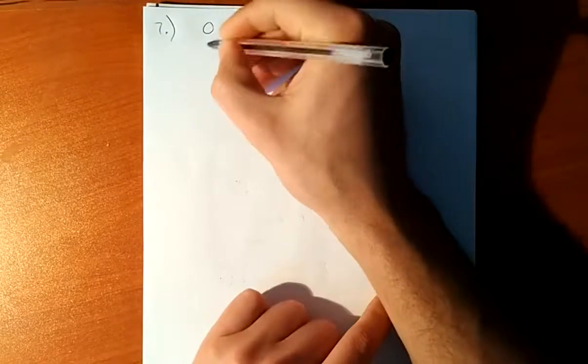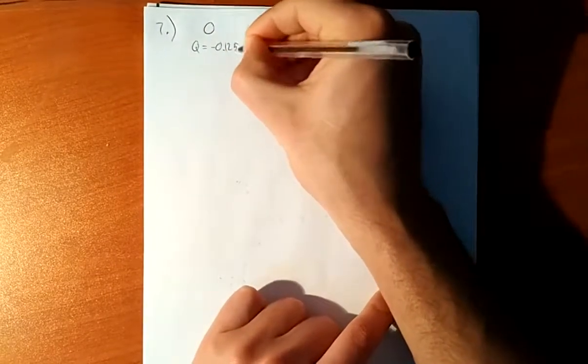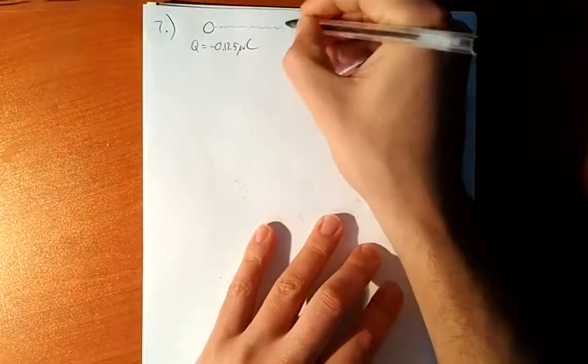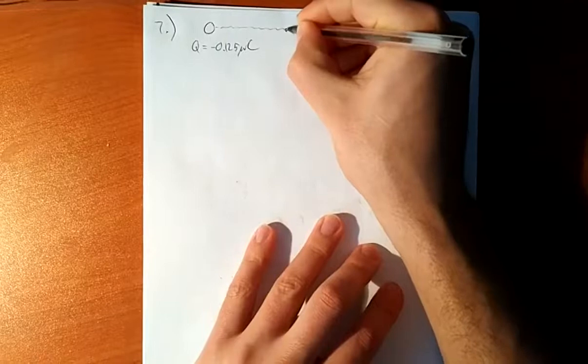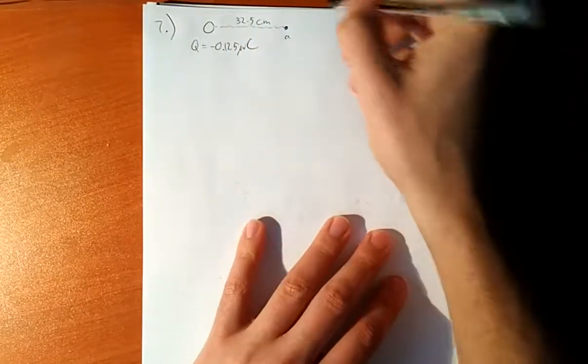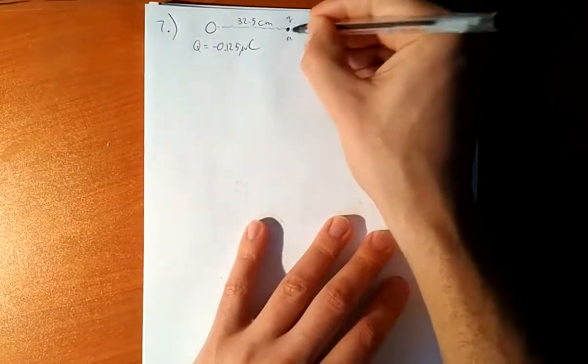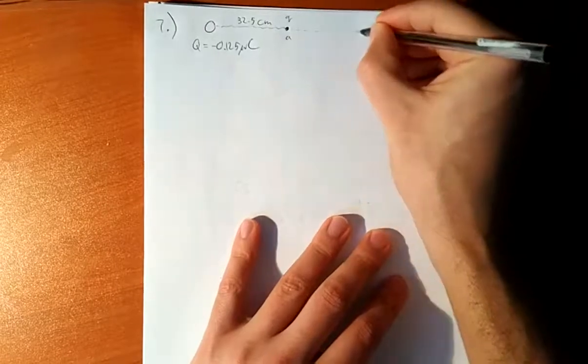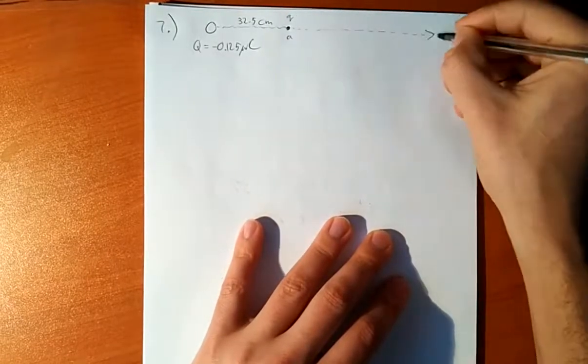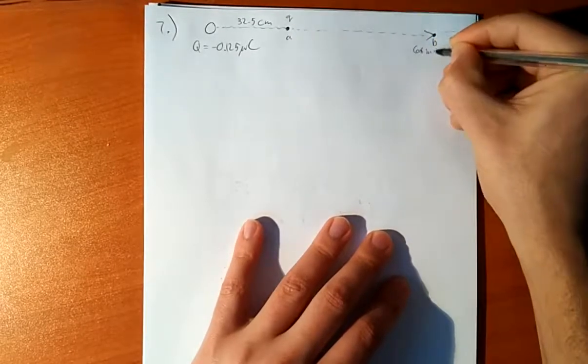So I've got my charge Q there, let's say that is 0.125 microcoulombs, a certain distance. Let's say point A, and this is 32.5 centimeters away from it. There is a little charge Q, which is the electron, and it gets pushed away because it also has a negative charge, and it will just keep going all the way to, let's say point B, and that is at infinity.